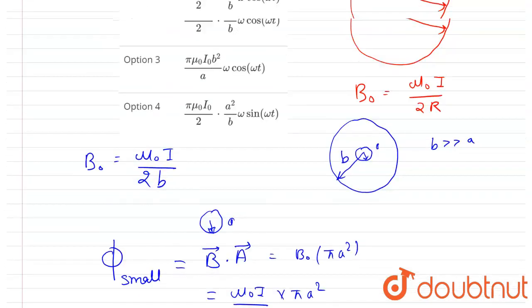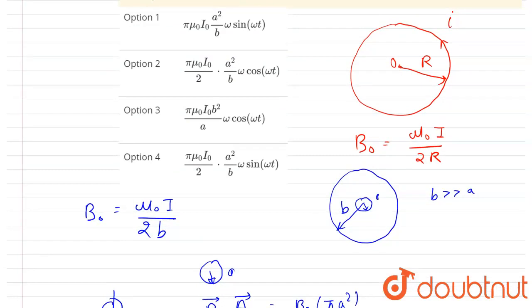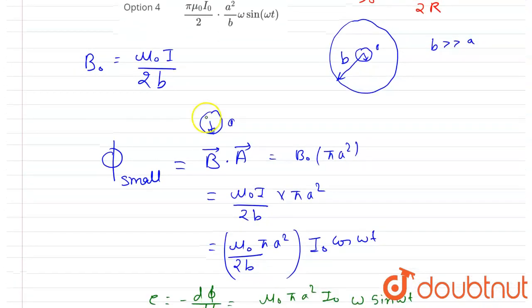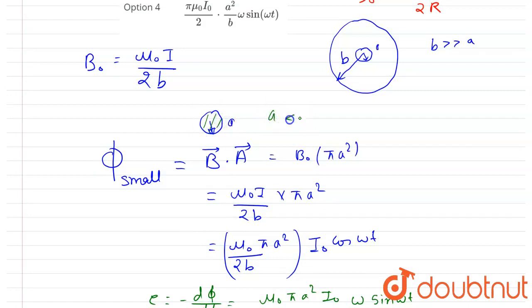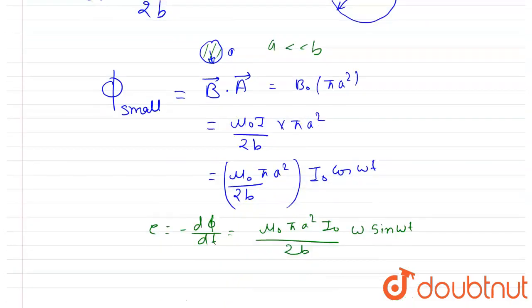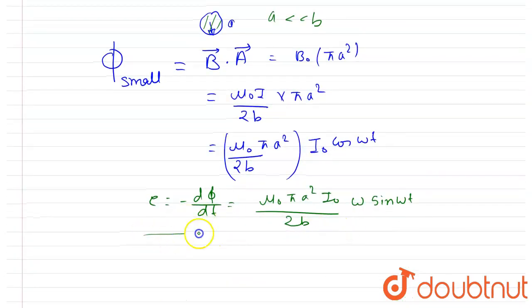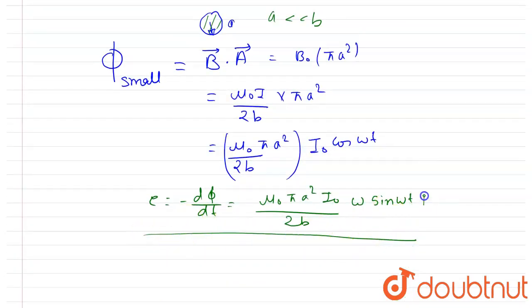Simple. So what we have done, if you see, we found the magnetic field at the center of the bigger loop. And we took that magnetic field through the smaller loop whole area. Since this area is very small, since A is very, very small, so we know that through whole area of the smaller loop, the magnetic field is this only, which we calculated at the center of the bigger loop. And we calculated the flux and we just differentiated that and we got this as the answer.